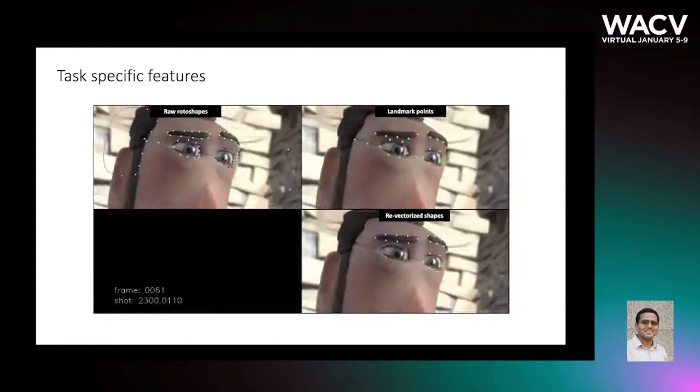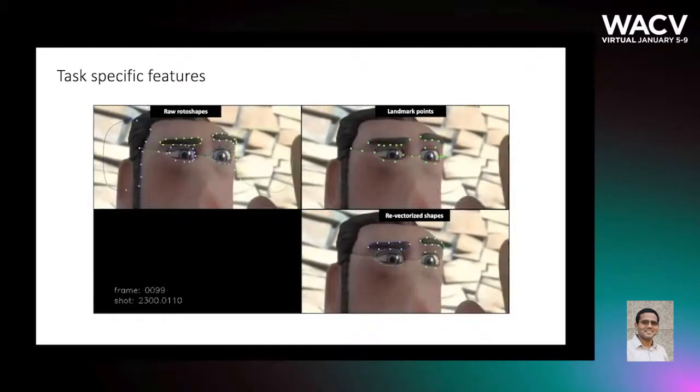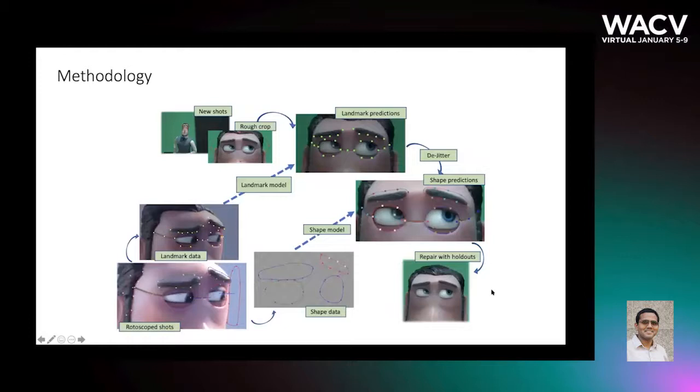The next step is to make sure the predicted shapes are temporally coherent. We break the image-to-shape computation into two steps. The first model predicts the landmark points given an image, and the second group of models predict the multitude of shapes, each conditioned on a subset of landmark points. During deployment on a video sequence, first the landmark points are separately predicted for all the frames.